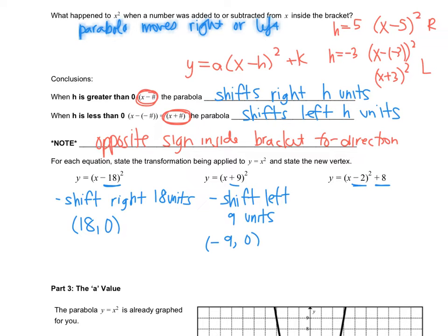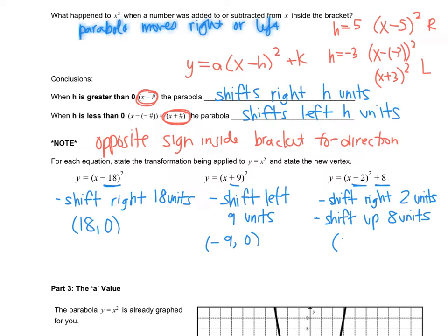The x minus 2 means you're shifting right 2 units. The plus 8 outside the brackets is your up-down, and you're shifting up 8 units because outside the brackets is regular logic. Shifting right 2 and up 8 makes the vertex positive 2, positive 8. Check your communication and make sure you're using proper words.